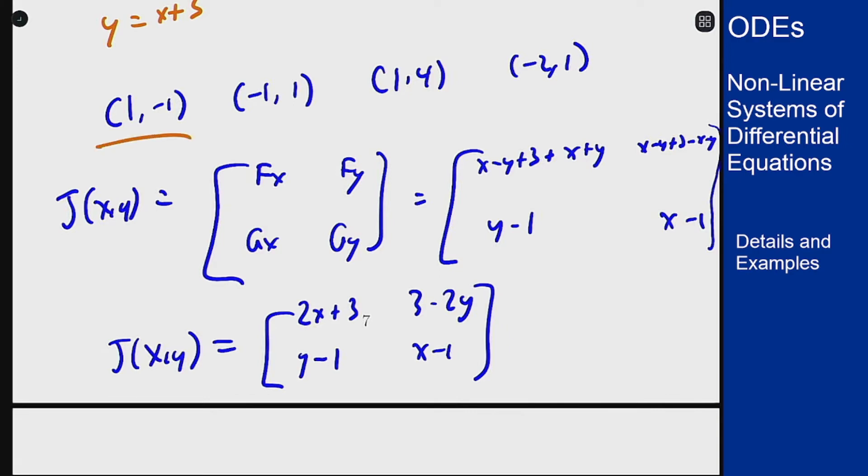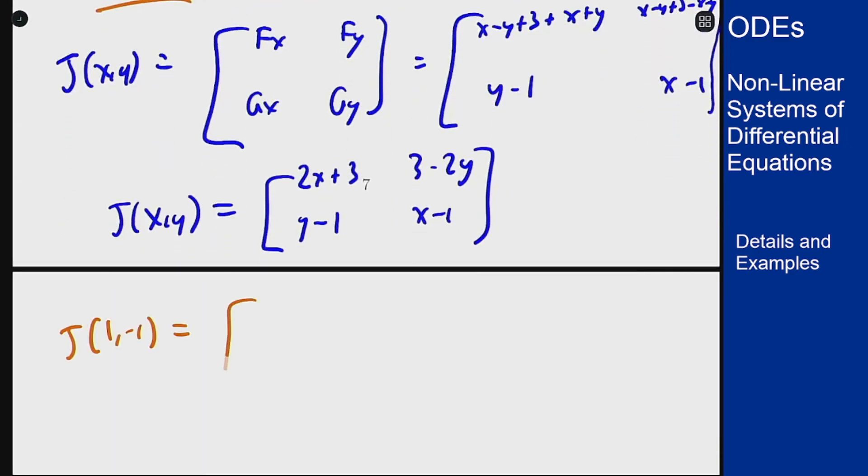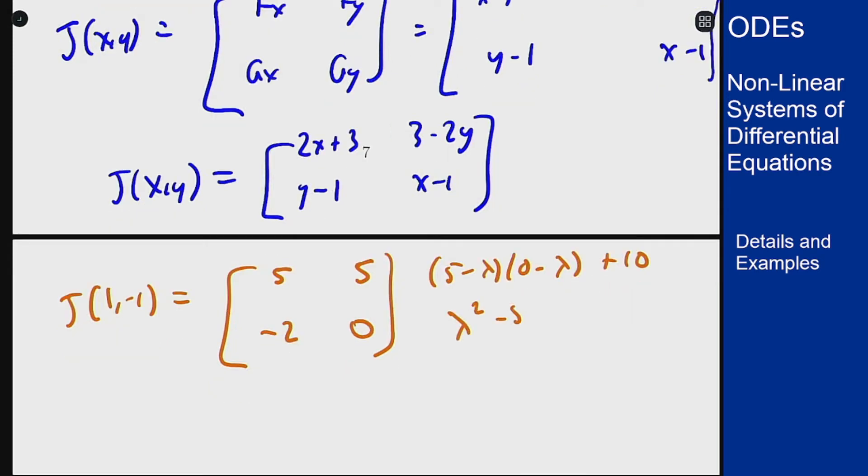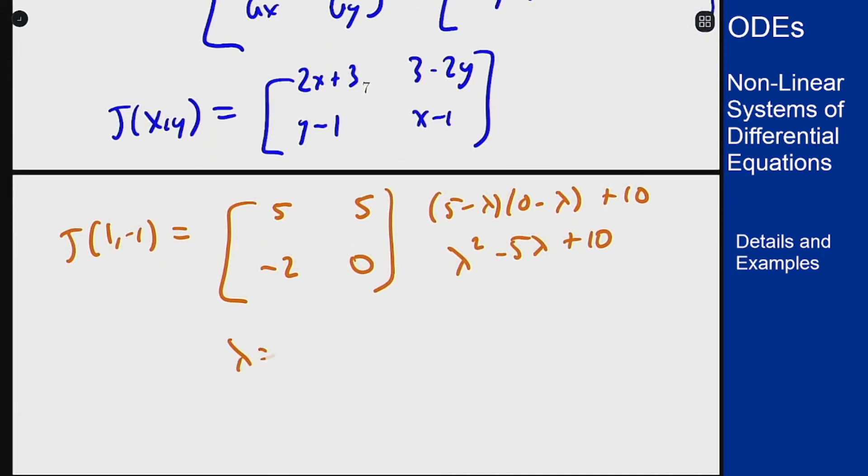Now we can plug in our four points. If I plug in 1 minus 1, I get 5, 5, minus 2, and 0. That's not super convenient, so let's look for the eigenvalues using the normal approach. 5 minus lambda, 0 minus lambda, plus 10. Lambda squared minus 5 lambda plus 10. This doesn't factor. The quadratic formula will tell us that lambda should be 5 plus or minus the square root of b squared is 25 minus 4ac is 40 over 2. These are complex with positive real part, so this equilibrium solution is unstable because it acts like a spiral source. This is not a point where I could have a basin of attraction, because it's not asymptotically stable.